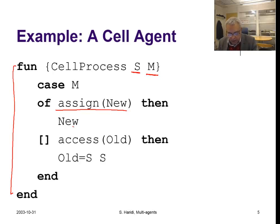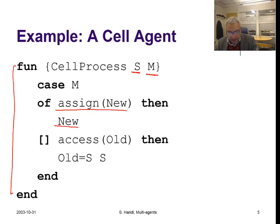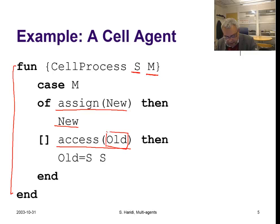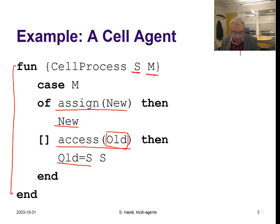Then the new state will simply be the new value — we move from the current state to the new state, overriding it with the new value. If the message is 'access' — a way to read the cell — we get a dataflow single-assignment variable, bind that dataflow variable to the current state, and don't change the state, meaning we return the same state.